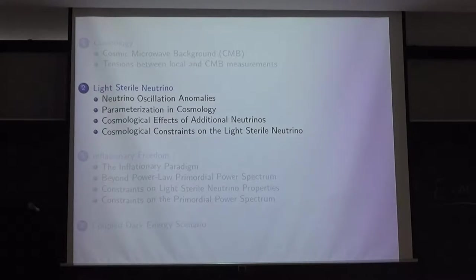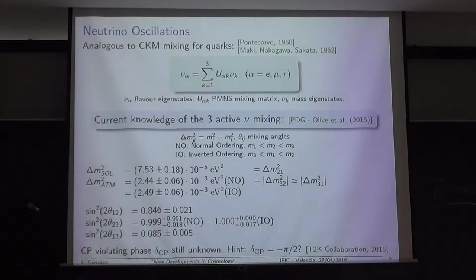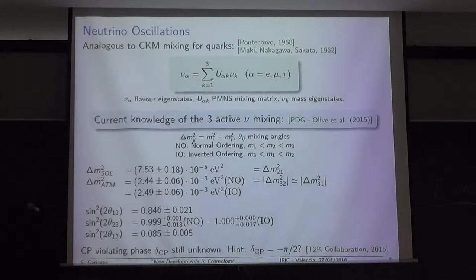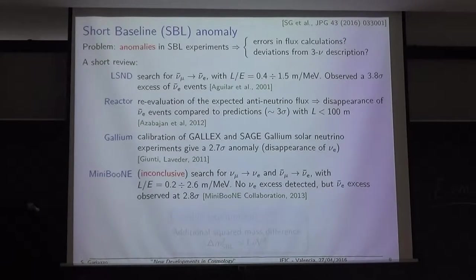Now we leave cosmology for a moment and go to neutrinos. We have mixing between the three flavor eigenstates and the three mass eigenstates through the mixing matrix called the Pontecorvo-Maki-Nakagawa-Sakata matrix. This is described by three angles and one CP-violating phase, and includes two squared mass differences. However, this paradigm does not work well in explaining all measurements — we have anomalies in short-baseline experiments. The types of experiments giving the anomaly include the LSND experiment around 2001, which observed an excess of electron anti-neutrino events.